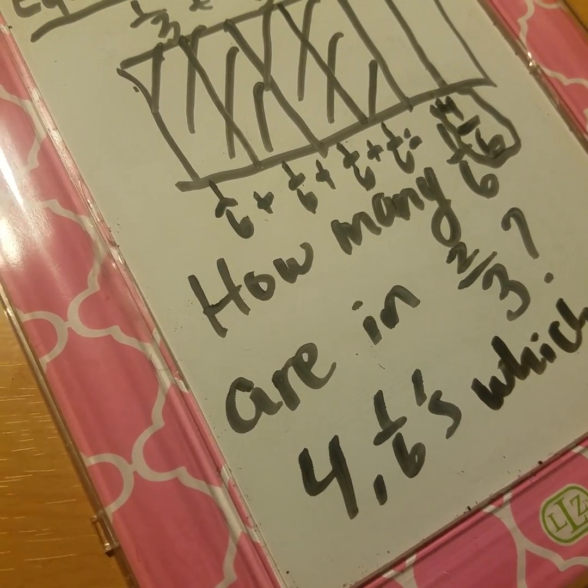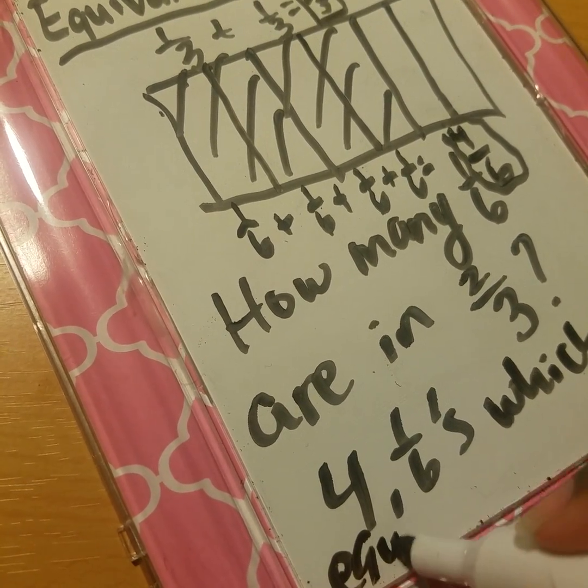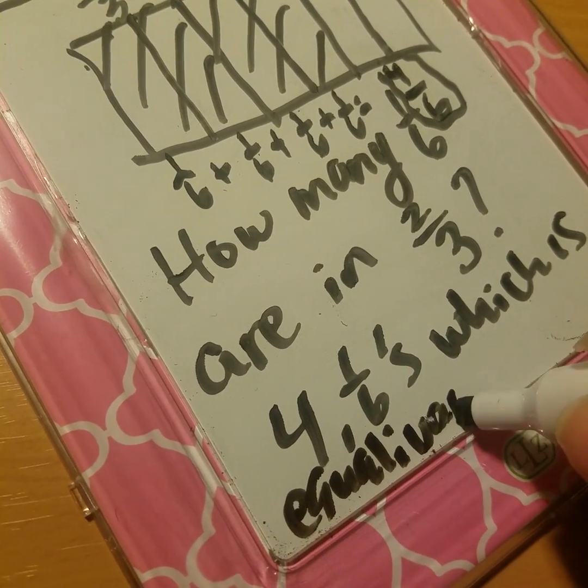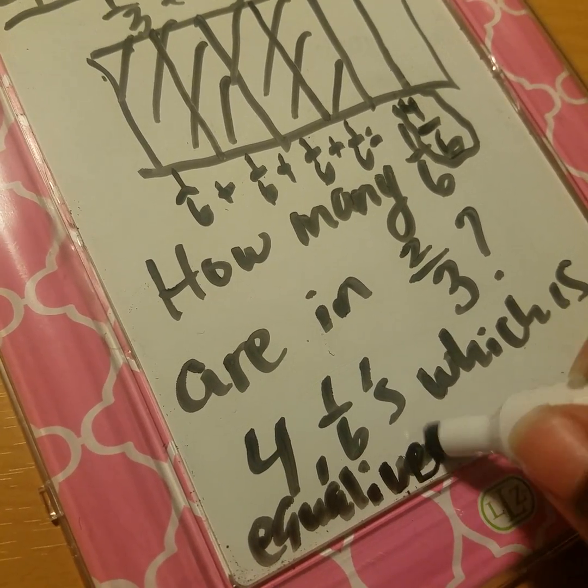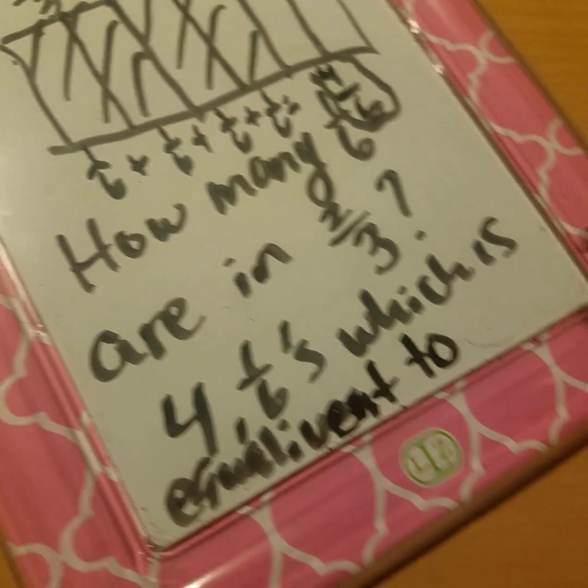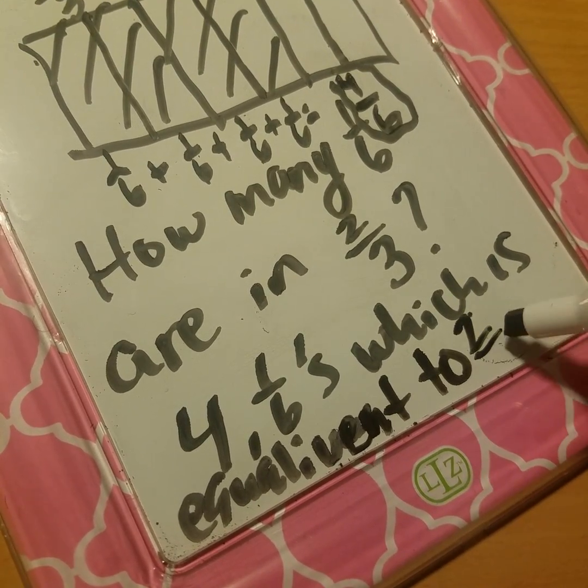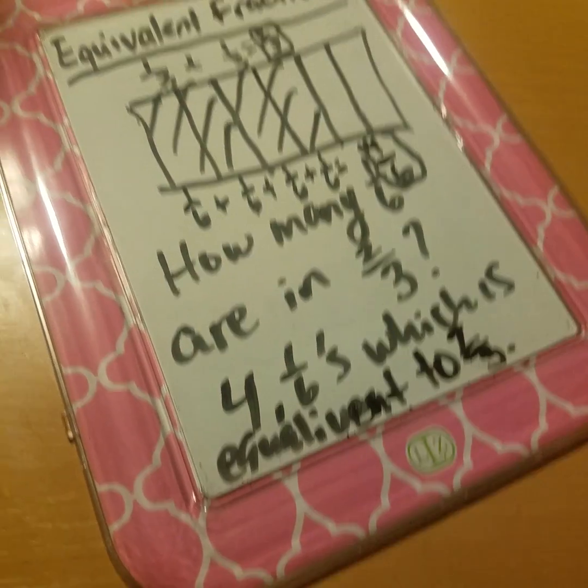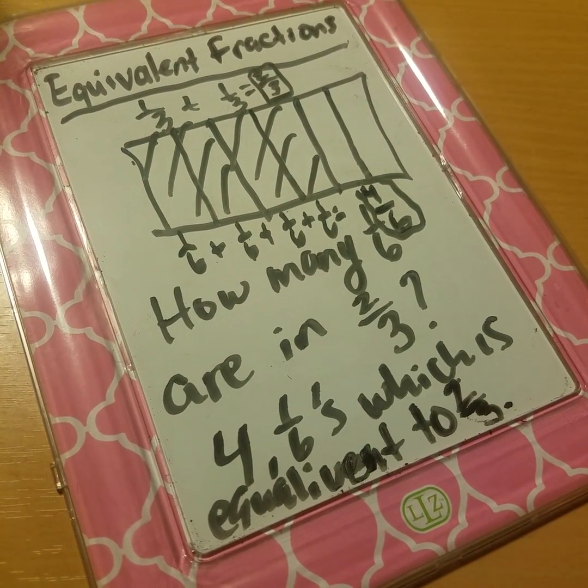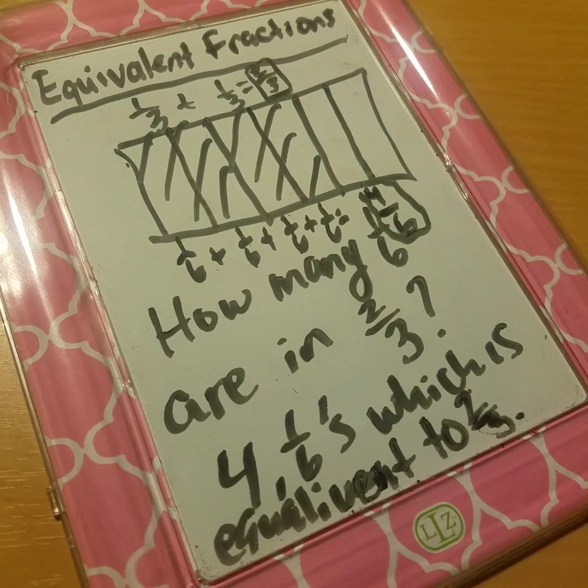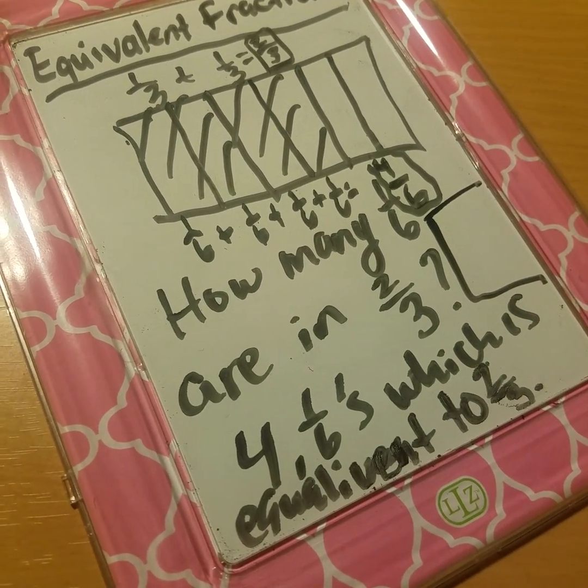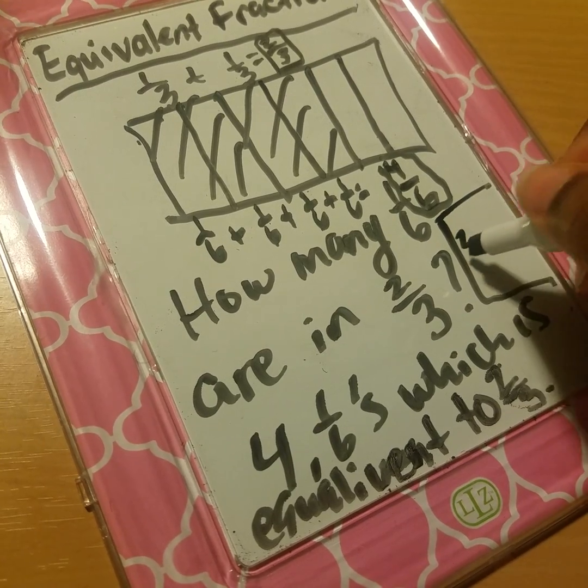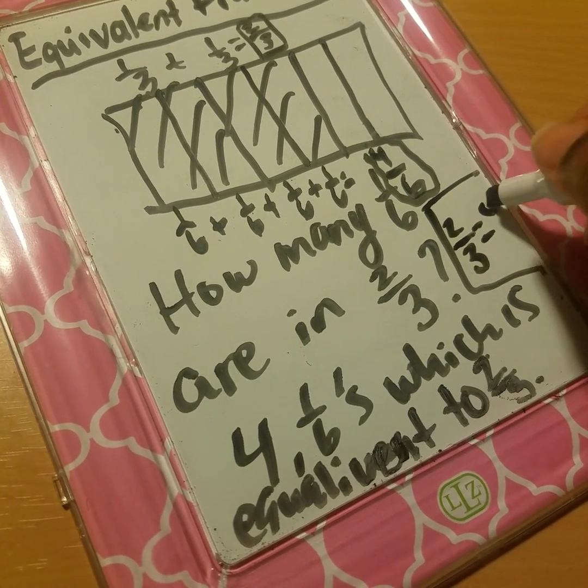Which is equivalent to two-thirds. And what that really boils down to is two-thirds equaling four-sixths.